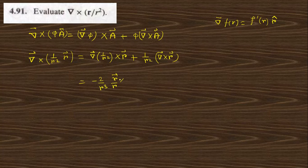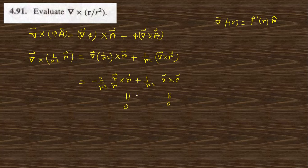The gradient expression can be written as r-vector/rⁿ cross r, plus 1/r² curl(r). The term r cross r is zero, and curl of r is also zero — this was proved in the previous lecture, whose link is given in the description box.